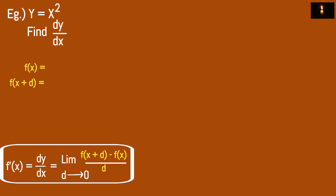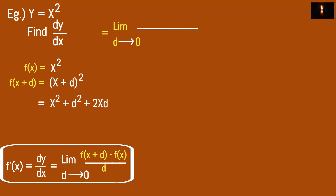So y equals x squared means f(x) equals x squared, and f(x plus d) equals (x plus d) whole squared. Expanding: (x plus d) squared equals x squared plus 2xd plus d squared. So f(x plus d) minus f(x) equals x squared plus 2xd plus d squared minus x squared, which gives d squared plus 2xd, divided by d.